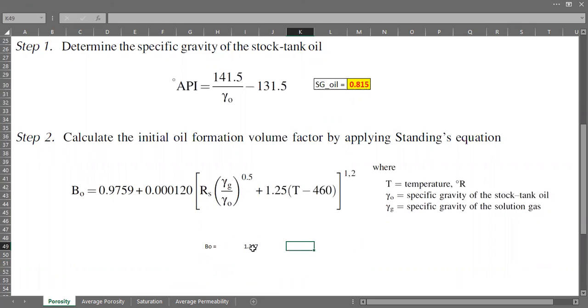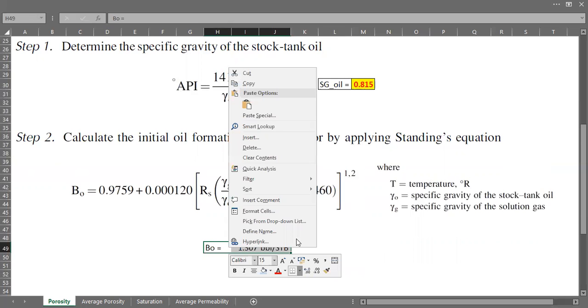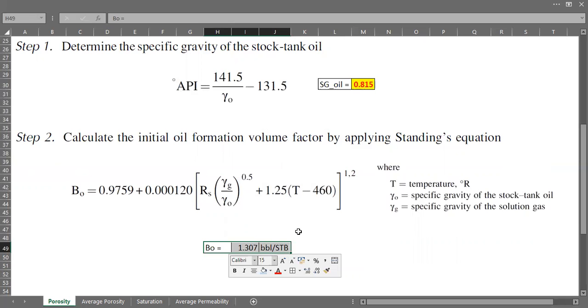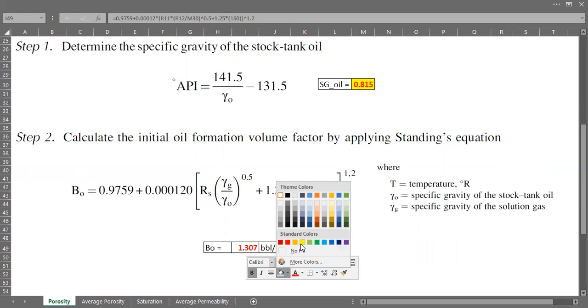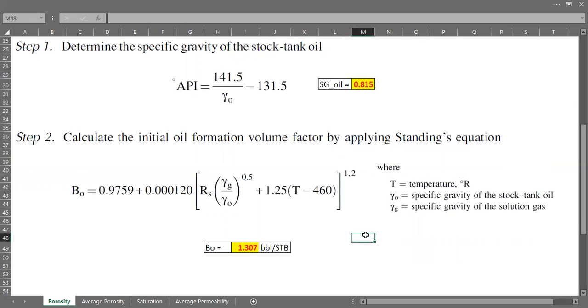I will close it and close again and then I will power it by 1.2. So this is the result: it's 1.307 in reservoir barrel per stock tank barrel condition.